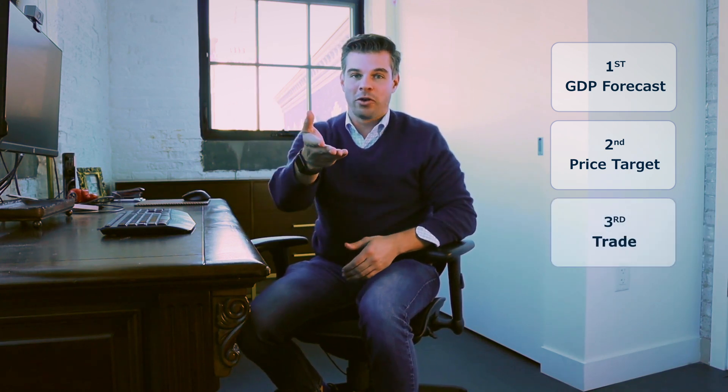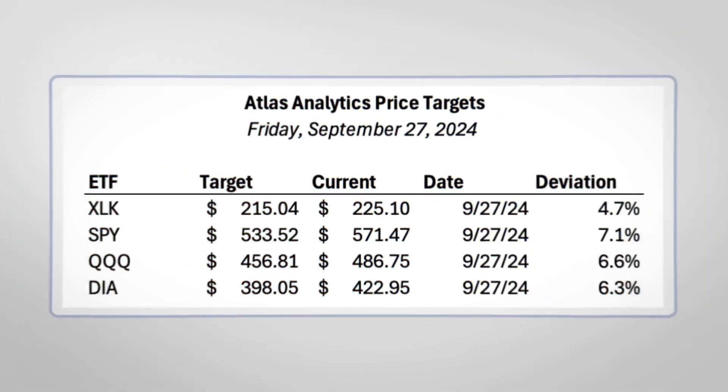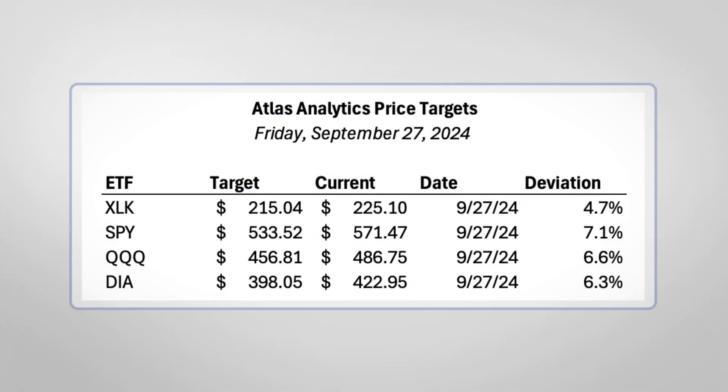And then third, if you feel comfortable, trading with Atlas Analytics. Here we can see all four broad indices are about properly valued as of Friday, September 27th, indicating that the economic malaise story may be abating. But what should investors trade if they want to take advantage of this? We'd suggest two strategies: either long calls or bull call spreads in order to take advantage of the upside surprise when GDP is released in October.